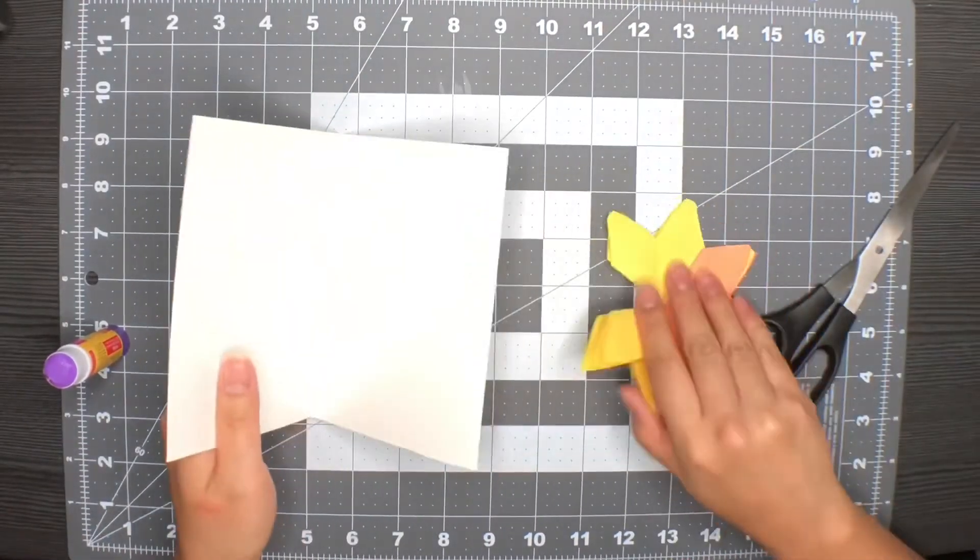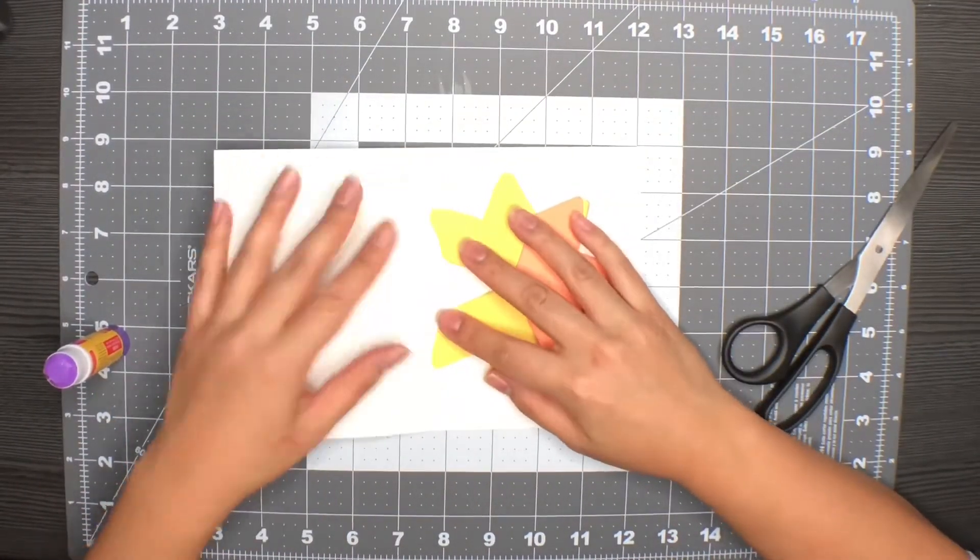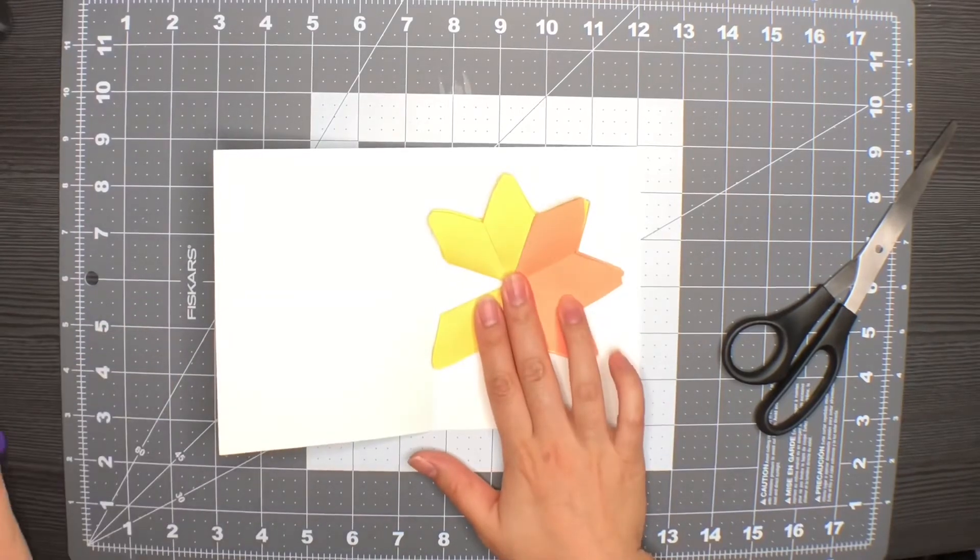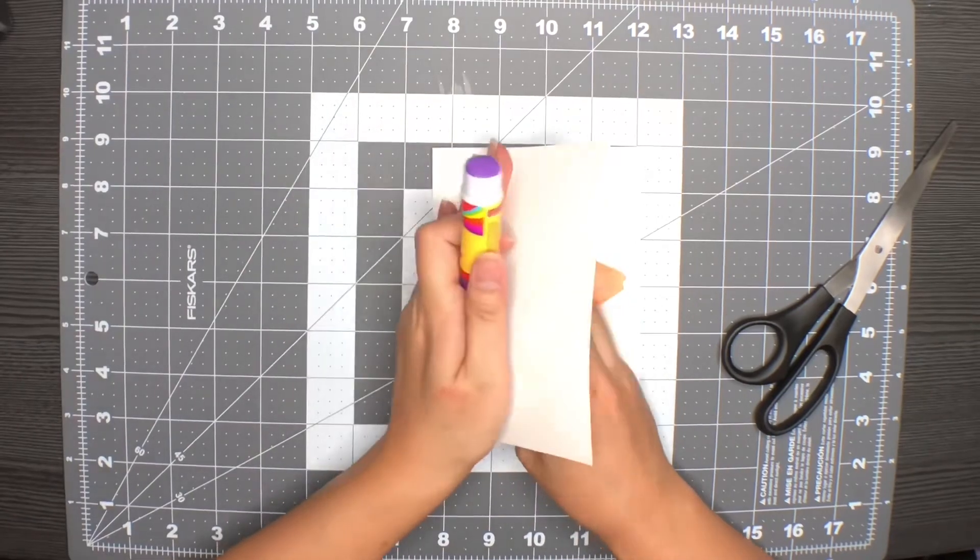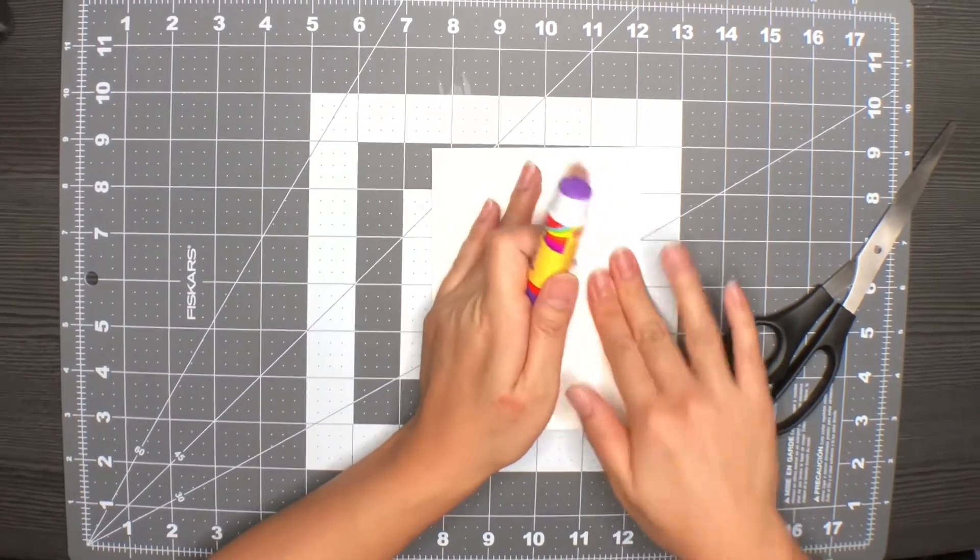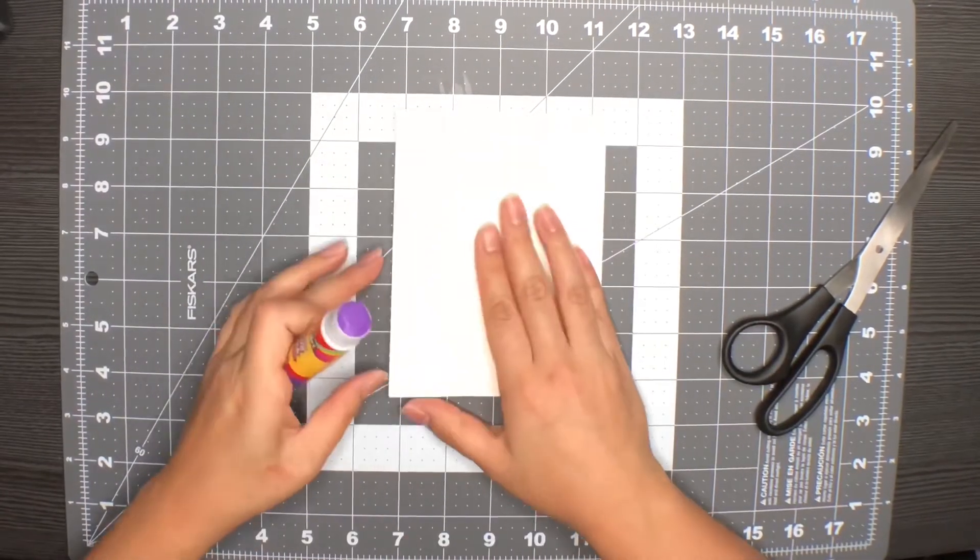Now we're going to attach the flowers to the card. You have to make sure that the flowers meet the crease of the card. And now we're going to put a little bit of glue on the outer petal and close the card to attach it, and then we'll do the same to the other side.